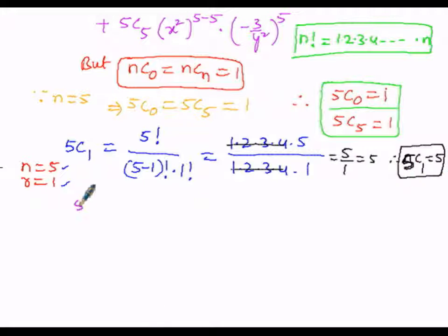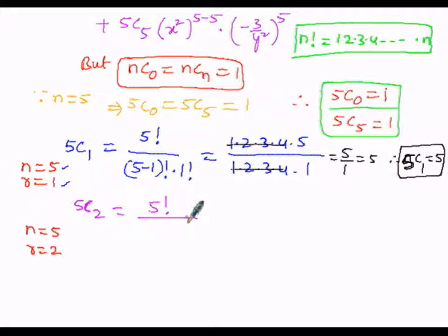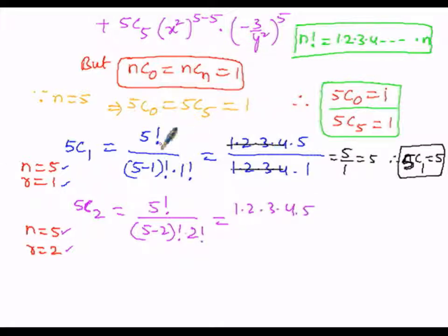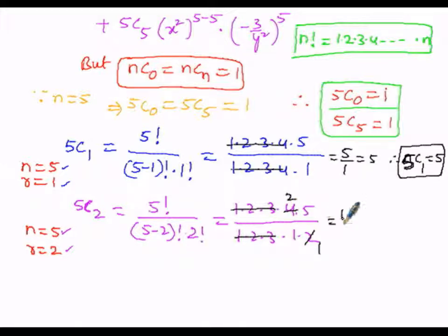To find 5C2, with n = 5 and r = 2: 5C2 = 5! / (3! × 2!) = (1×2×3×4×5) / ((1×2×3) × (1×2)). After cancellation, we get (4×5)/(1×2) = 20/2 = 10. Therefore 5C2 = 10.